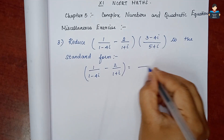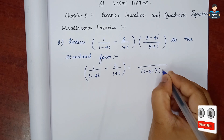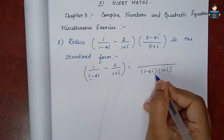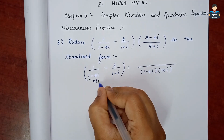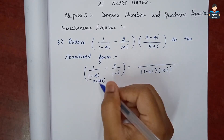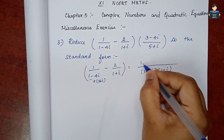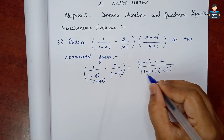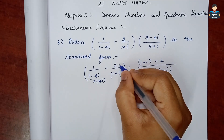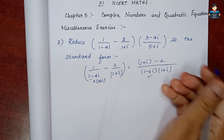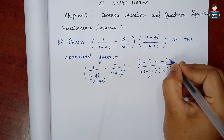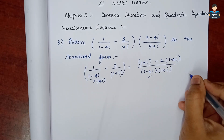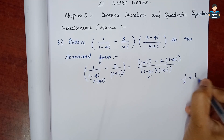So now we have 1/(1-4i). We multiply both numerator and denominator. So now we have 2 into (1-4i). This is like a normal fraction solve, similar to 1/2 plus 1/3.